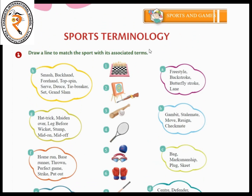The next section is about sports terminology. Draw a line to match the sport with its associated terms. Pictures are given on one side, games are given here, and terms are given here. You have to match with the right one. The first picture is about chess. Terms like freestyle, backstroke, butterfly stroke, and lane — these won't be right. Gambit, stalemate, move, resign, checkmate — yes! The word checkmate shows that it belongs to chess. So you have to draw a line from here to there.